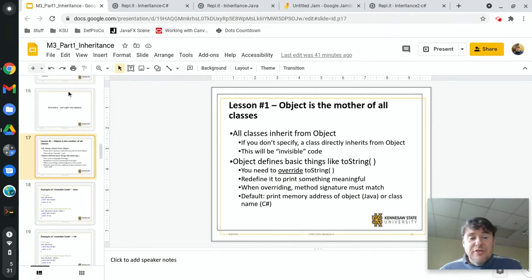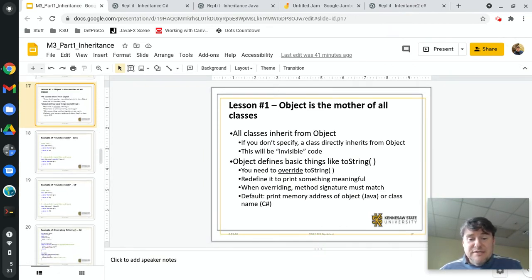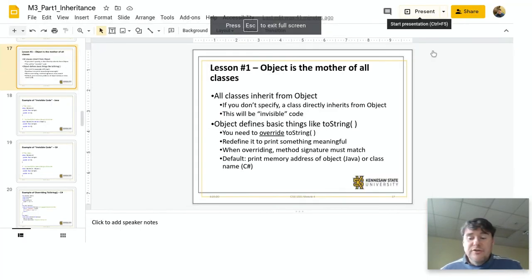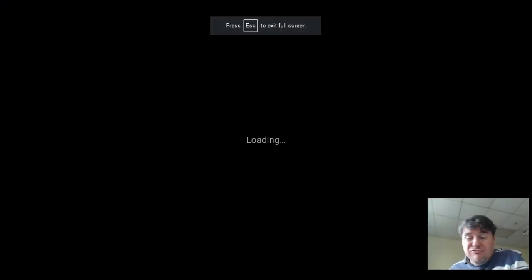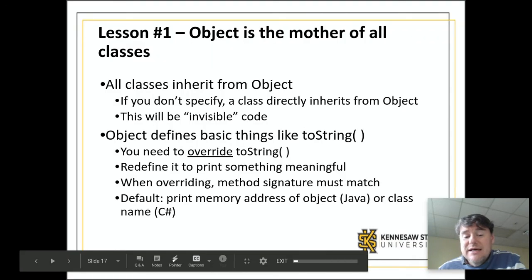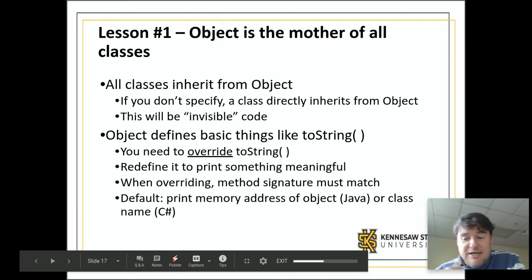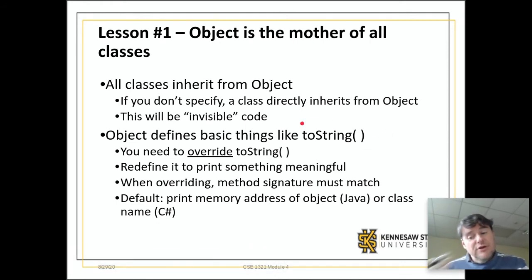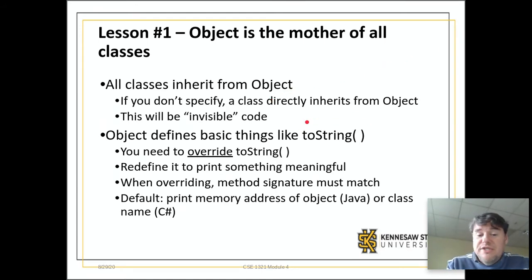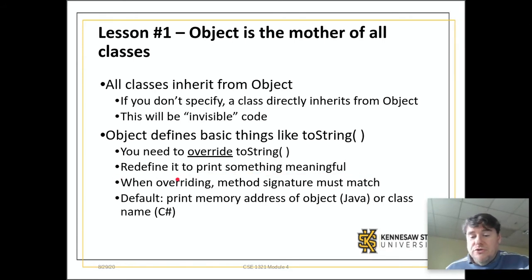So object is the mother of all objects—the mother of all classes. It is always there; there's nothing you can do about it. Every part of the Java language and every part of the C# language inherit from object. Math inherits from object. Everything inherits from object—it is the root of the language. It's not just toString up there; there are other methods, but toString is the one you're going to use the most, and frequently you'll want to override it to print something more useful.